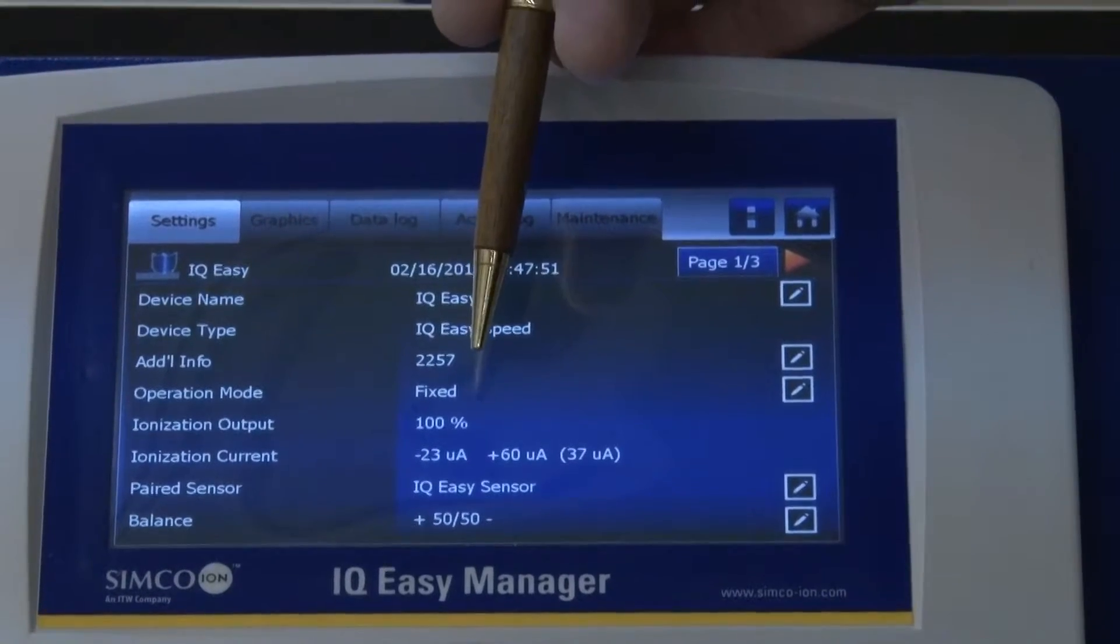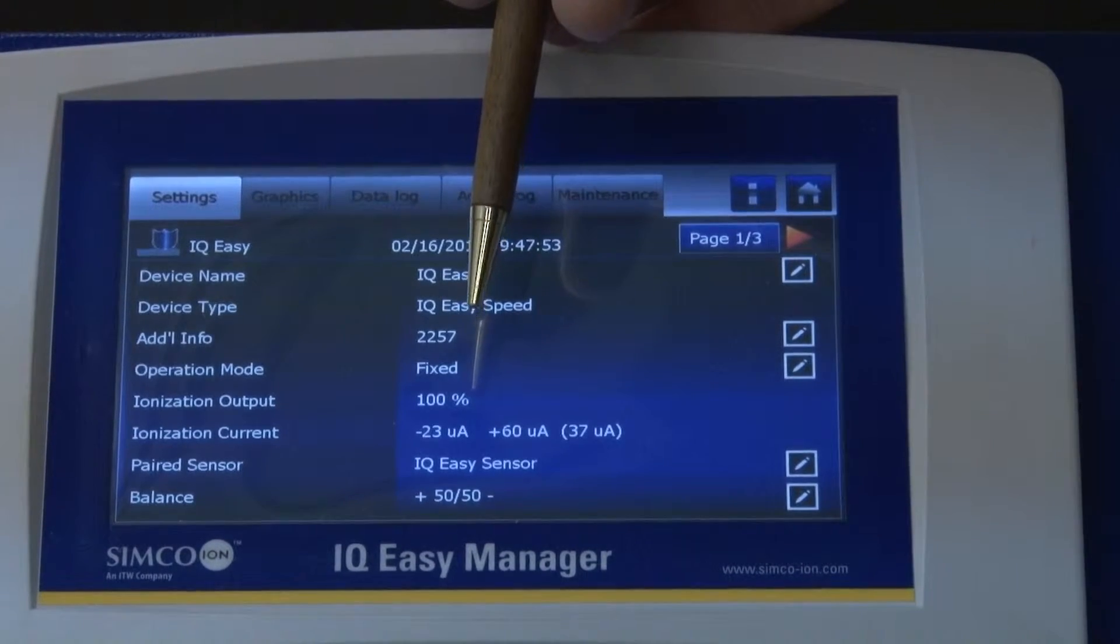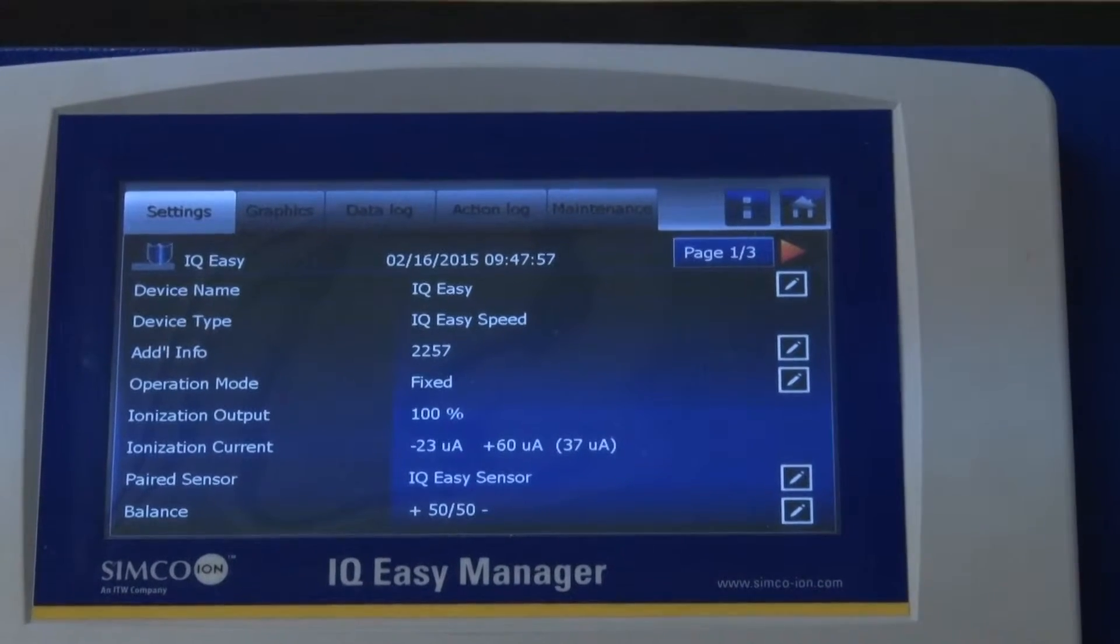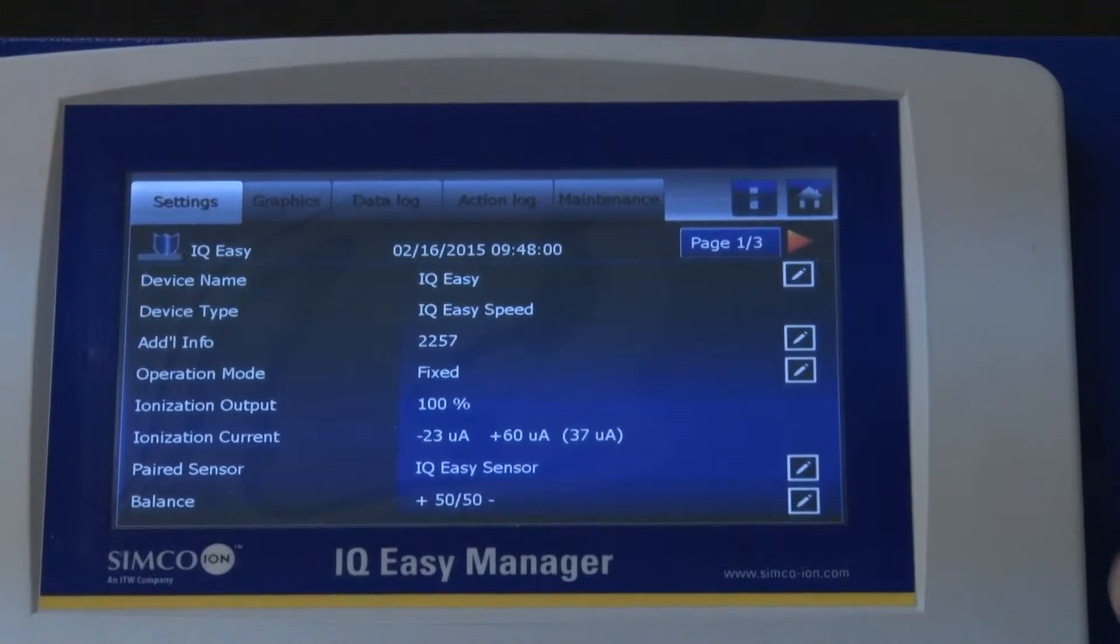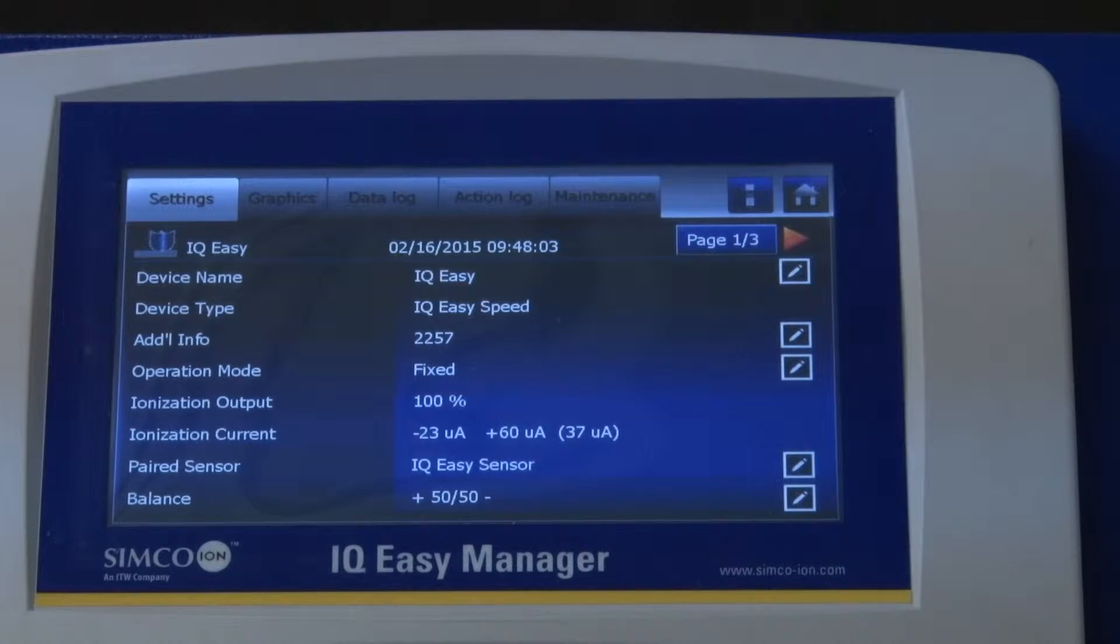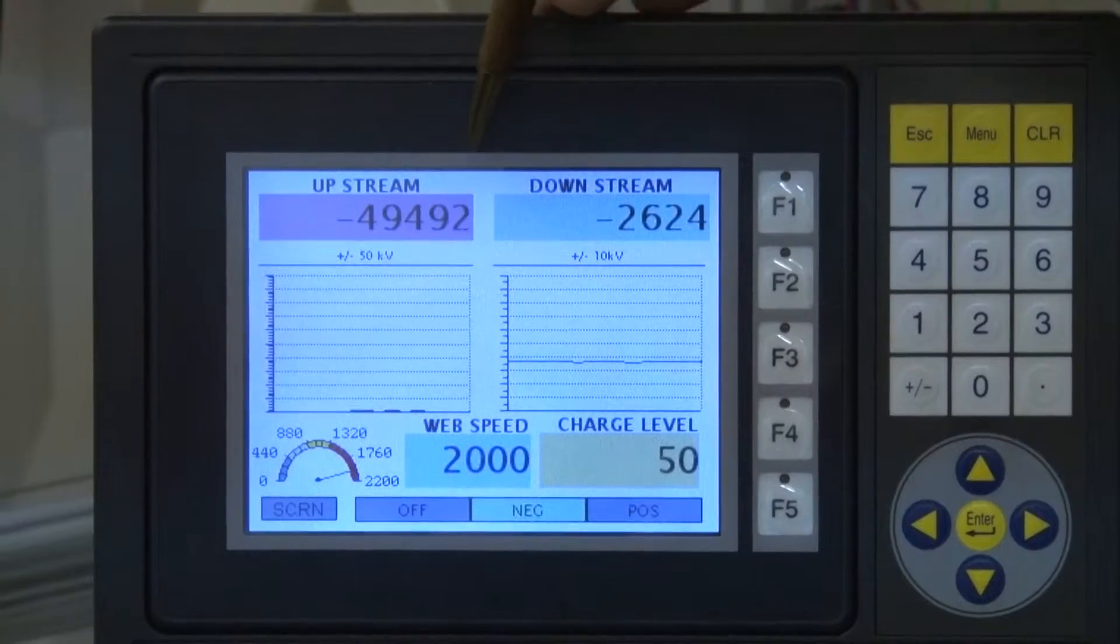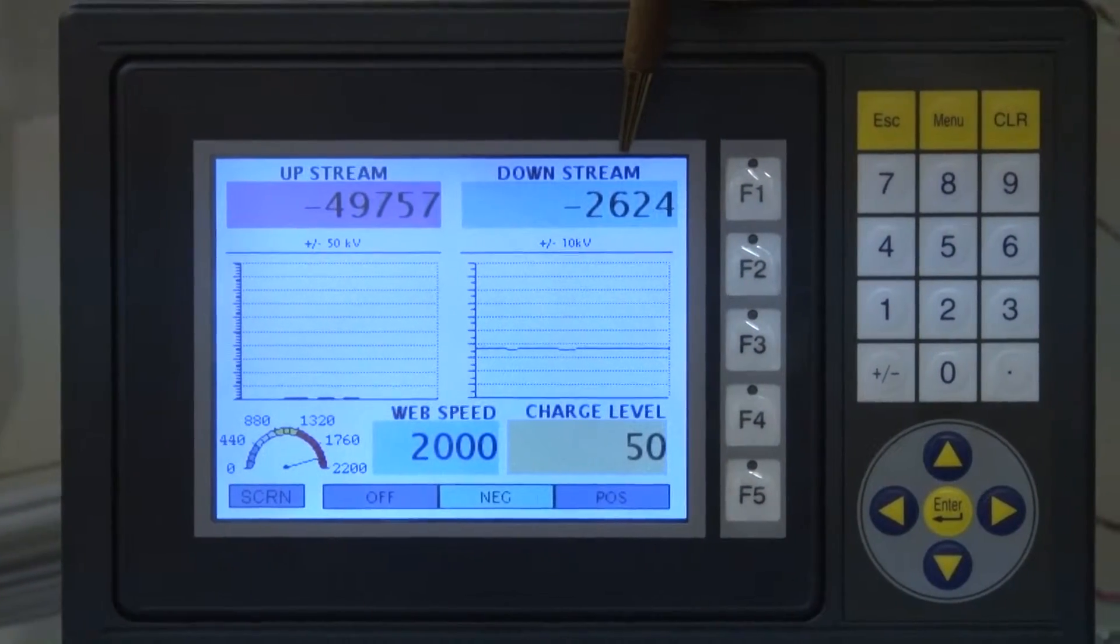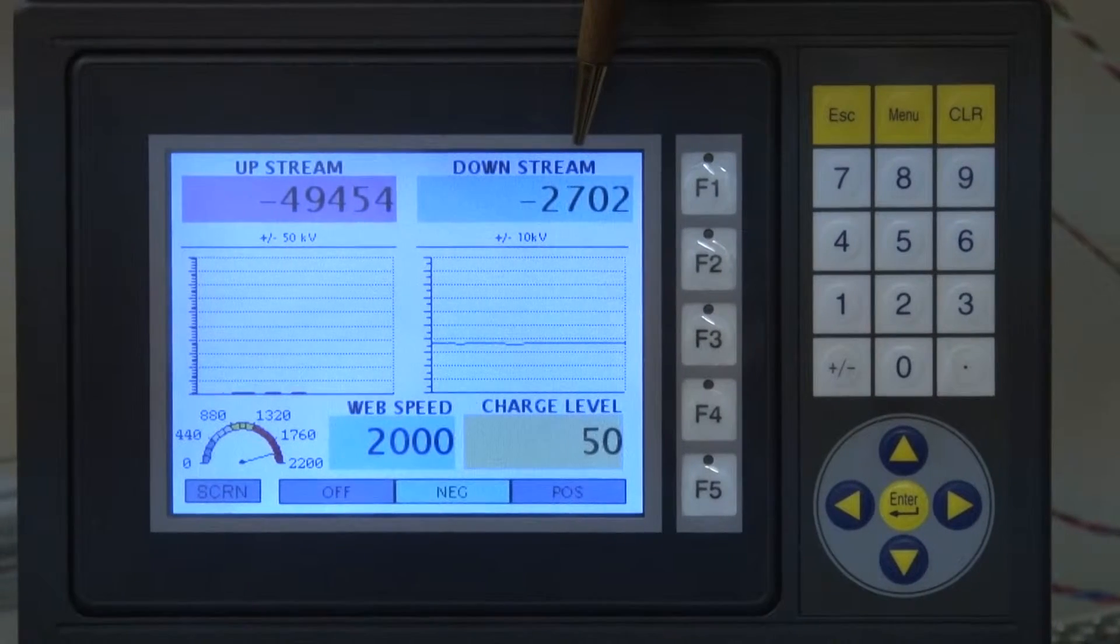Right now, the system has the neutralizing bar configured in the fixed mode. In the fixed mode, the positive and negative high voltage power supplies are run at roughly the same voltage, and the result is quite good in that mode. We're seeing that the net downstream charge from the neutralizing bar is about five percent of the upstream charge.